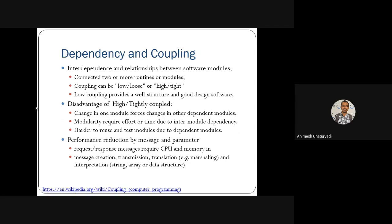Dependency and coupling are fundamental concepts of software engineering. The interdependency of software components means coupling could be of two types: loose coupling and tight coupling. Low coupling is expected in good software design, but there is a disadvantage of high/tight coupling in software development. There are three disadvantages of tight coupling: a change in one component requires a change in another, modularity is reduced, and reusing modules becomes difficult. Performance for messages and parameters becomes hard to manage at CPU and memory resources.